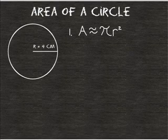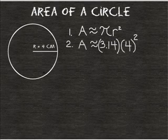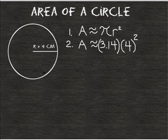After stating our formula, we are going to substitute the symbol pi with the value 3.14. And in this case, we are going to take r and substitute it with the number 4 because the radius of this circle is 4 centimeters and raise 4 to the second power.